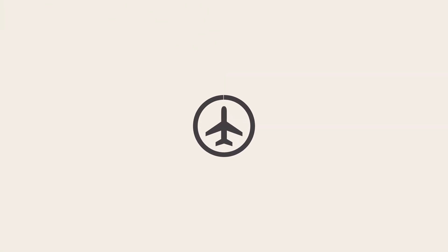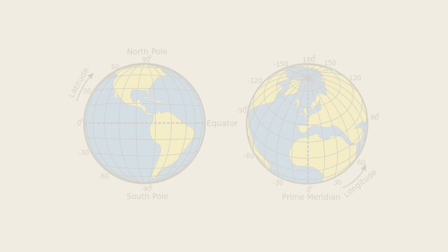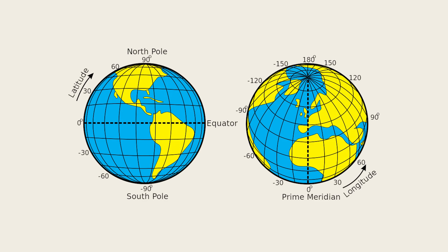During your private pilot training, during the knowledge portion, you're going to have to know how to calculate latitude and longitude. Latitude and longitude is a way we can calculate an exact location based on how far east or west, or how far north or south a location is.